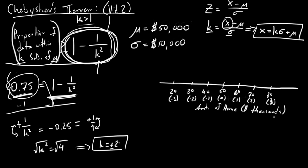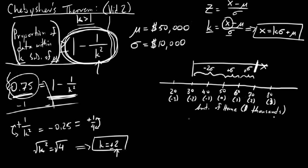So we found that k equals ±2. As we mentioned in the last video, this is one of those values worth memorizing — within two standard deviations, according to Chebyshev's Theorem, is always at least 75% of the data. Using this fact and wanting a dollar amount: two standard deviations each way from the mean puts us between $30,000 and $70,000. That price range would have to encompass 75% of the homes that are going to sell.